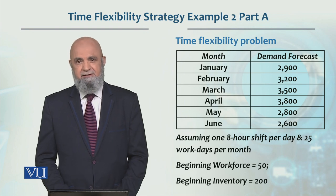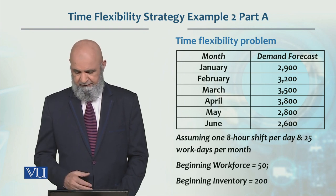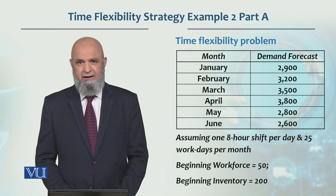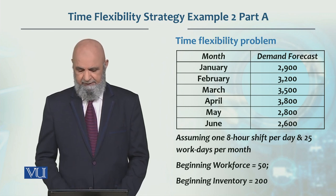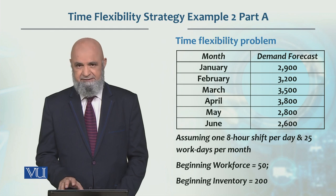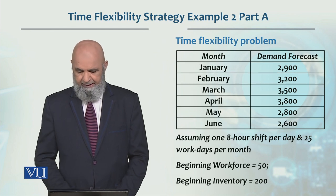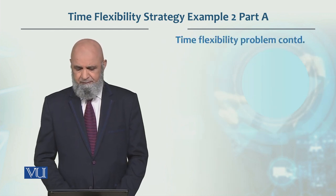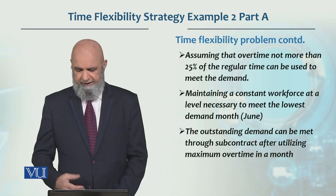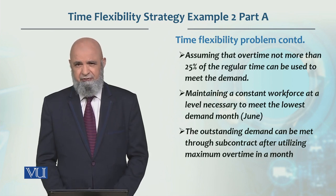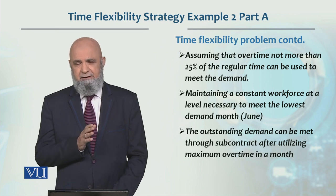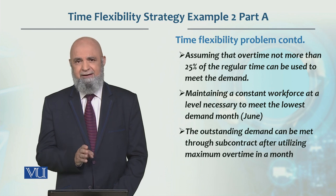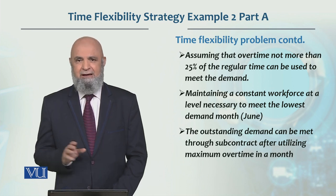The beginning inventory is 200 units and the beginning workforce is 50 workers. There is a constraint in this case: overtime is limited to 25% of the regular time — that is the maximum overtime limit available.